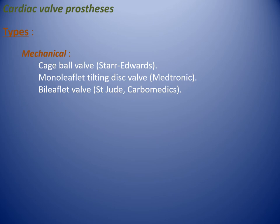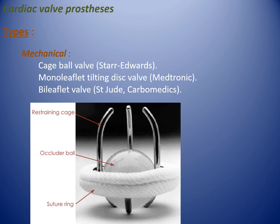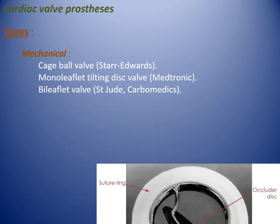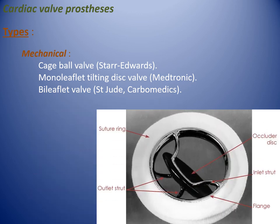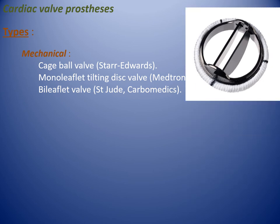Cardiac valve prostheses types — Mechanical: cage ball valve (Starr-Edwards), monoleaflet tilting disc valve (Medtronic), and bileaflet valve (St. Jude, Carbomedics). The cage ball valve is now obsolete, the monoleaflet is no longer used. The bileaflet valve — St. Jude and Carbomedics — is the most common mechanical valve used nowadays.